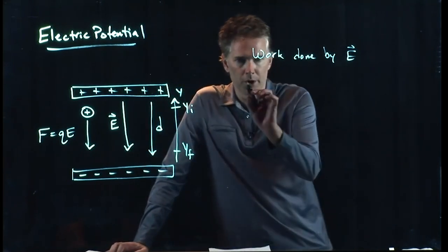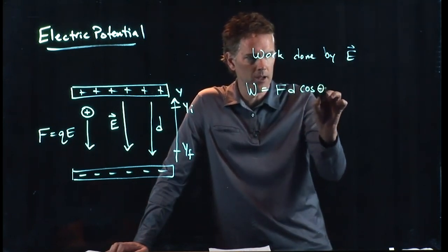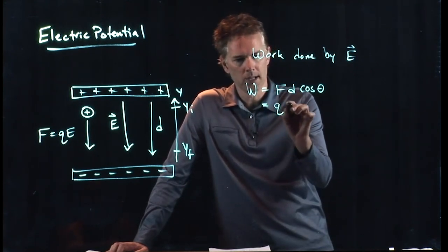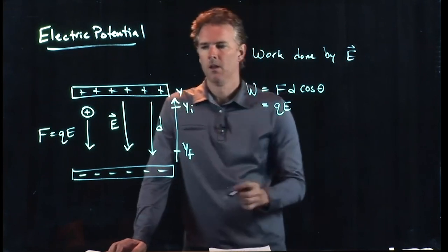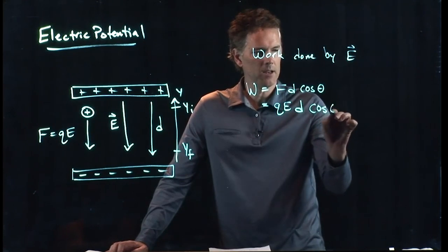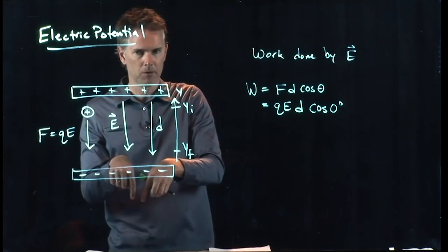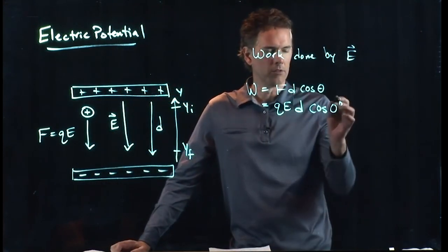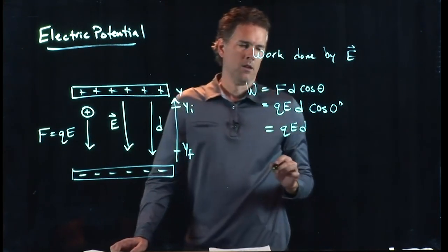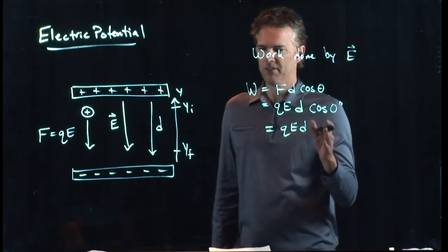We've got work equals F, D, cosine theta. In this case, the force is just Q times E. The distance is D. The theta is, again, zero degrees. Electric field is down, charge moves down. Everything's in the same direction. So the angle between those is zero, and cosine of zero is, of course, one. So we get the work is just equal to QE times D.